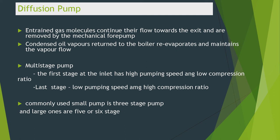In multi-stage pumps, the first stage at the inlet has high pumping speed and low compression ratio, while the last stage has low pumping speed and high compression ratio. The commonly used small pump is a three-stage pump, and the large ones are five or six stage.